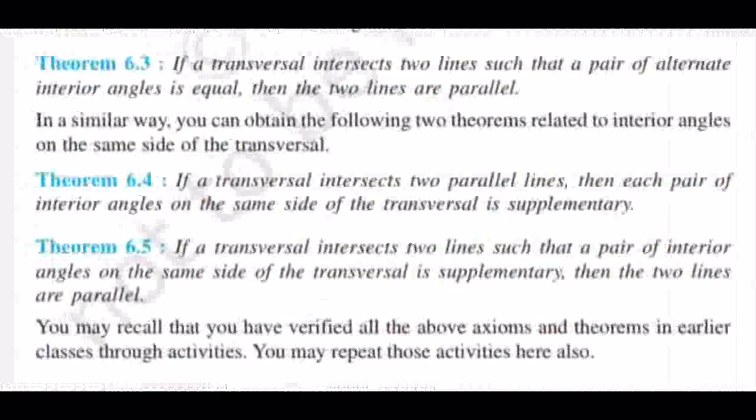The next theorem is just the opposite: if a transversal intersects two lines and the alternate interior angles are equal, then the lines are parallel. First theorem says if a transversal and parallel lines are present, then alternate interior angles will be equal. This theorem says if alternate interior angles are equal, then the lines are parallel.